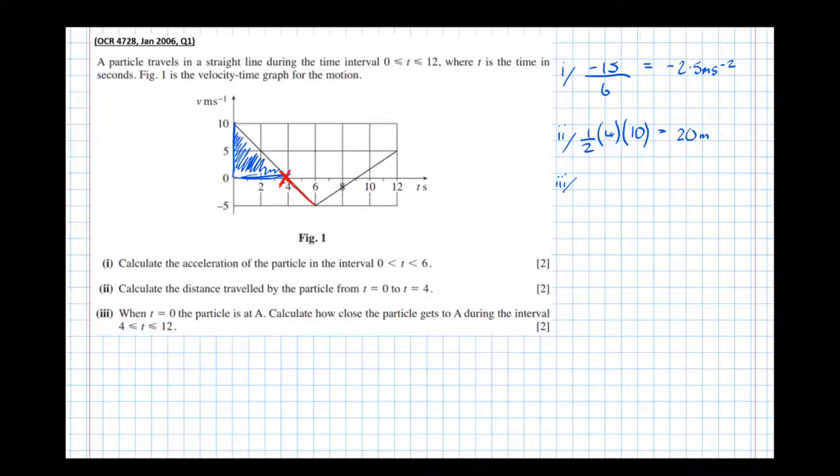This area under the graph here indicates negative displacement because the area is beneath the x-axis. Therefore the red area indicates that the particle is moving back towards A.